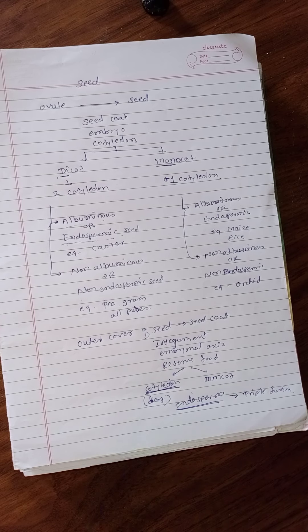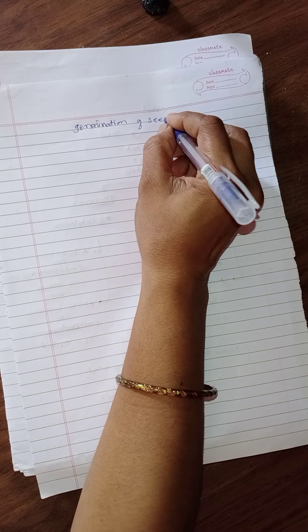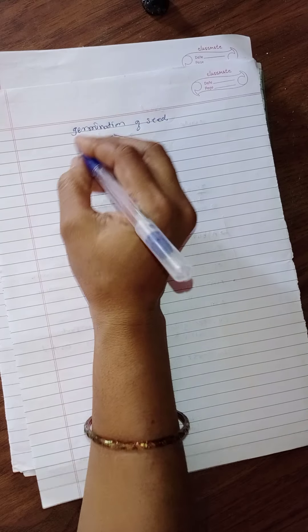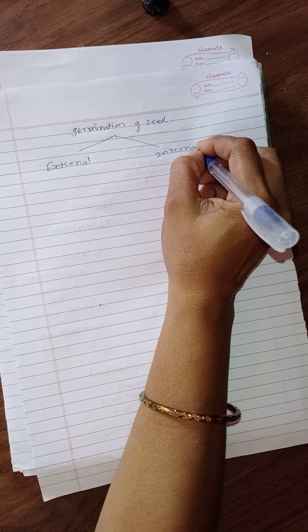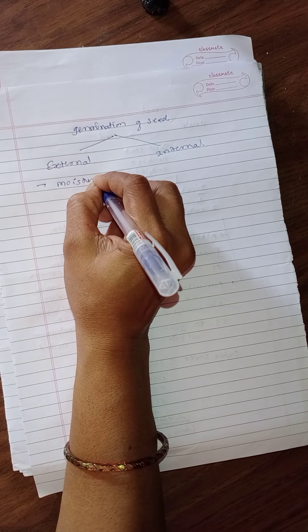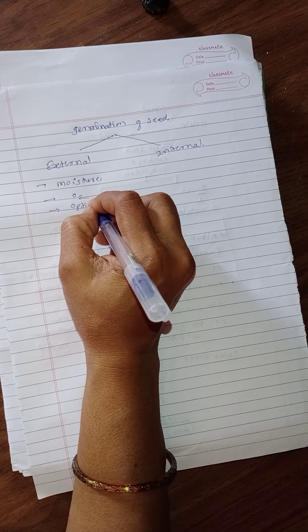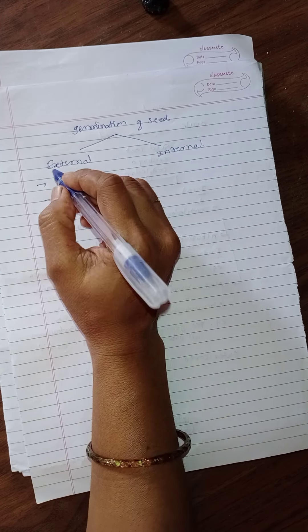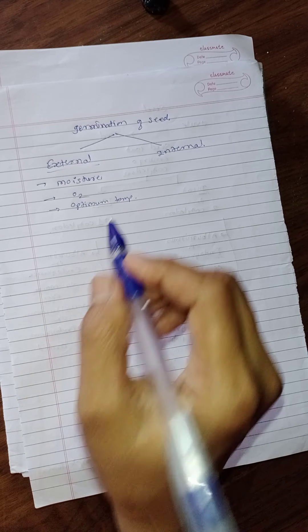For germination of seed, some conditions are required — external conditions and internal conditions. External conditions are: presence of optimum moisture, presence of oxygen, and optimum temperature. These external conditions are essential for seed germination.